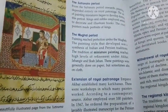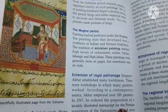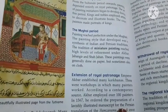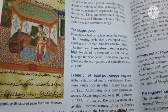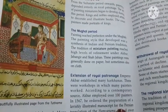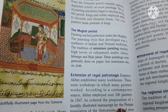Next is the Mughal period. Paintings reached perfection under the Mughals. The painting style that developed was a synthesis of Indian and Persian traditions. The tradition of miniature paintings reached a high level of refinement under Akbar, Jahangir, and Shah Jahan.